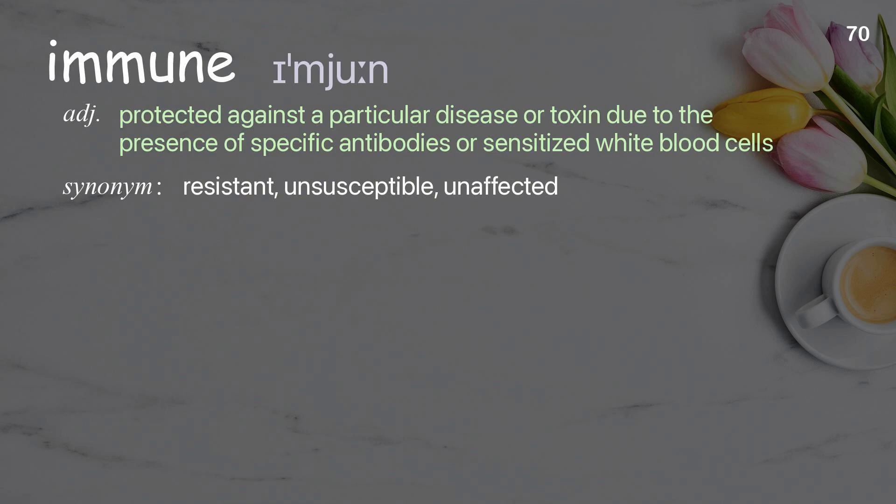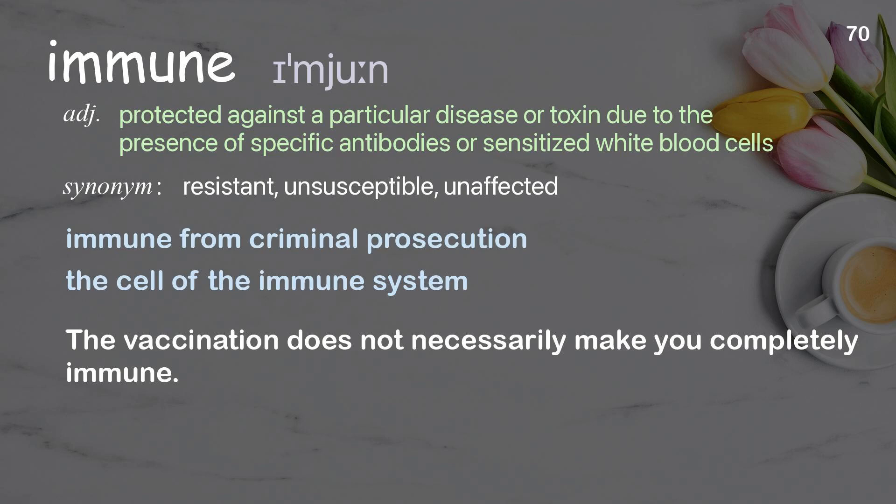Immune: protected against a particular disease or toxin due to the presence of specific antibodies or sensitized white blood cells. Examples: immune from criminal prosecution, the cell of the immune system. The vaccination does not necessarily make you completely immune.